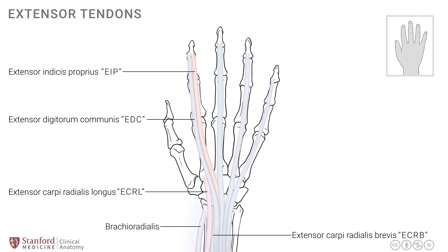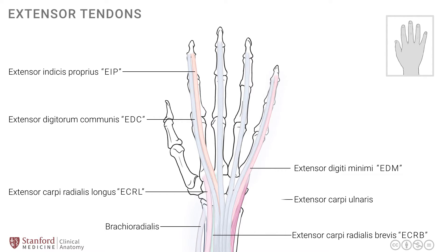There is one other muscle which goes into the little finger, known as extensor digiti minimi, or EDM for short. Note that the index finger and the little finger each have two extensor tendons — an independent extensor in addition to the common extensor: the EIP for the index finger and the EDM for the little finger. This allows for independent extension of these two fingers. There's also the extensor carpi ulnaris, or ECU, the most ulnar of these muscles, going to the base of the fifth metacarpal. It is a strong extensor of the wrist and has a balancing action with the extensors on the radial side. All of these muscles are supplied by the radial nerve.